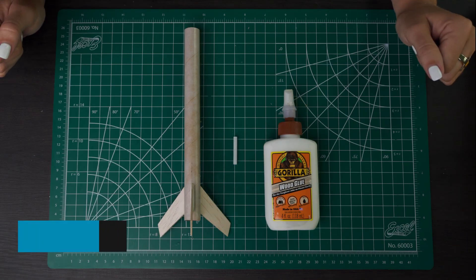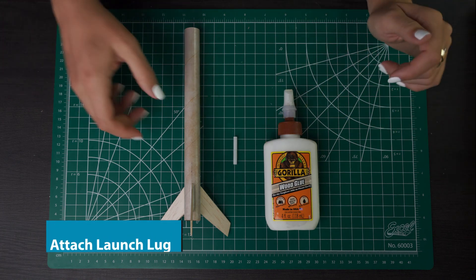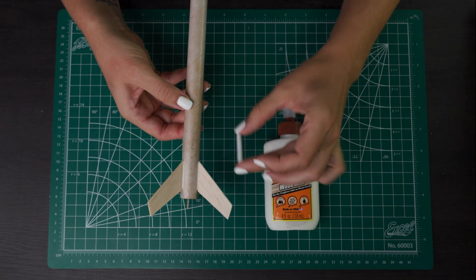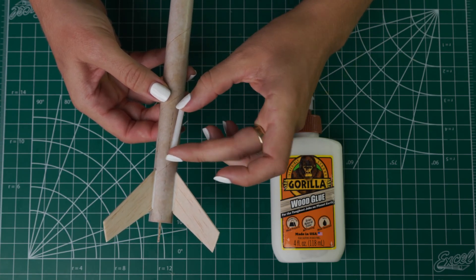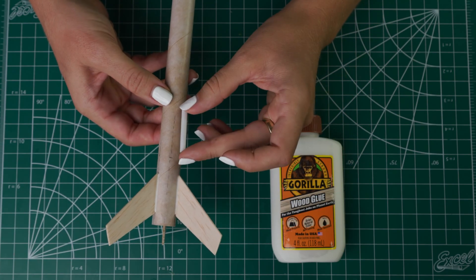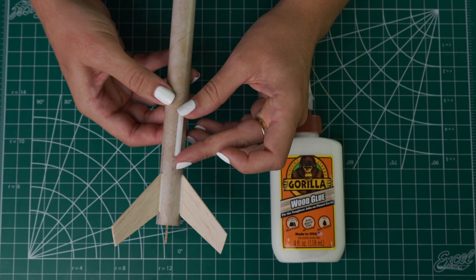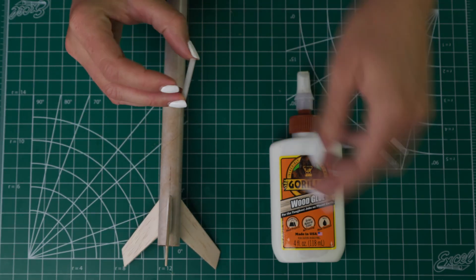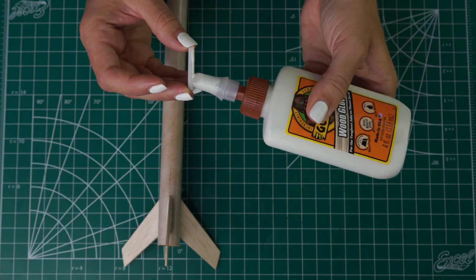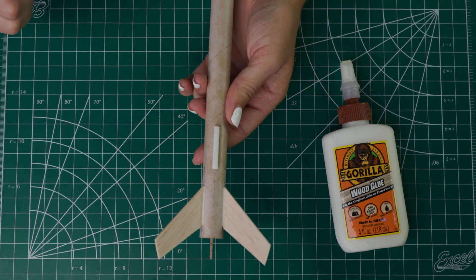Next up we're going to attach the launch lug to the body tube. This is how the rocket goes onto the launch rod. It's really important that when we attach this it's parallel to the body tube so you don't want it to be at an angle. That's why we made this straight line earlier and then you have your mark here at two inches so that should be where the bottom of the launch lug sits. Then you can just apply glue to this and put it on, then let it dry.